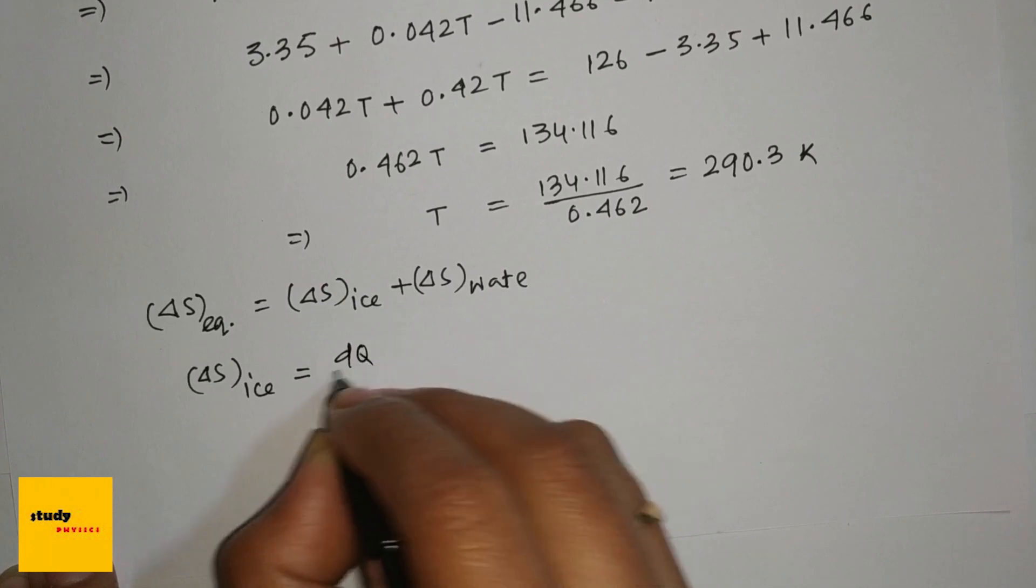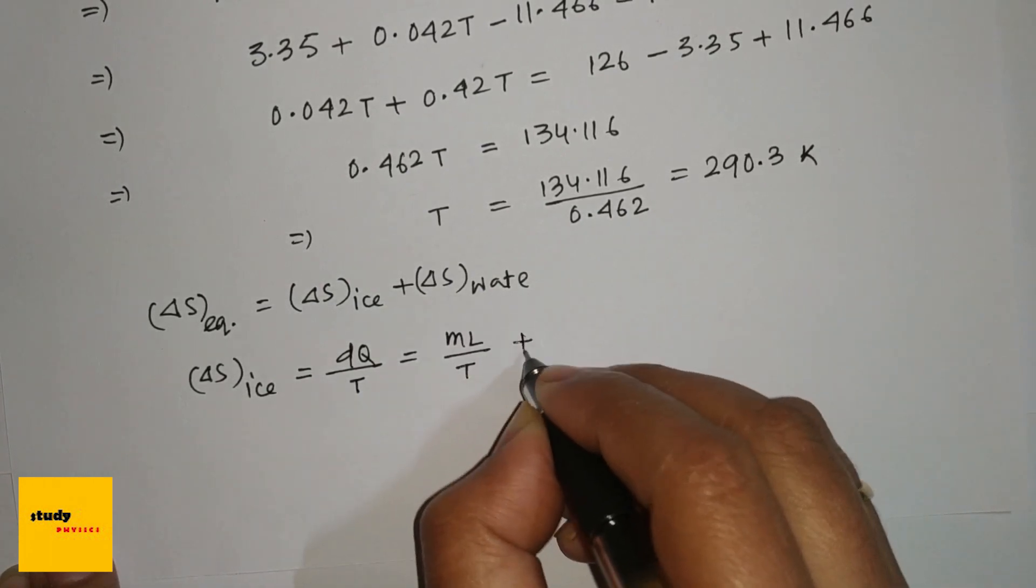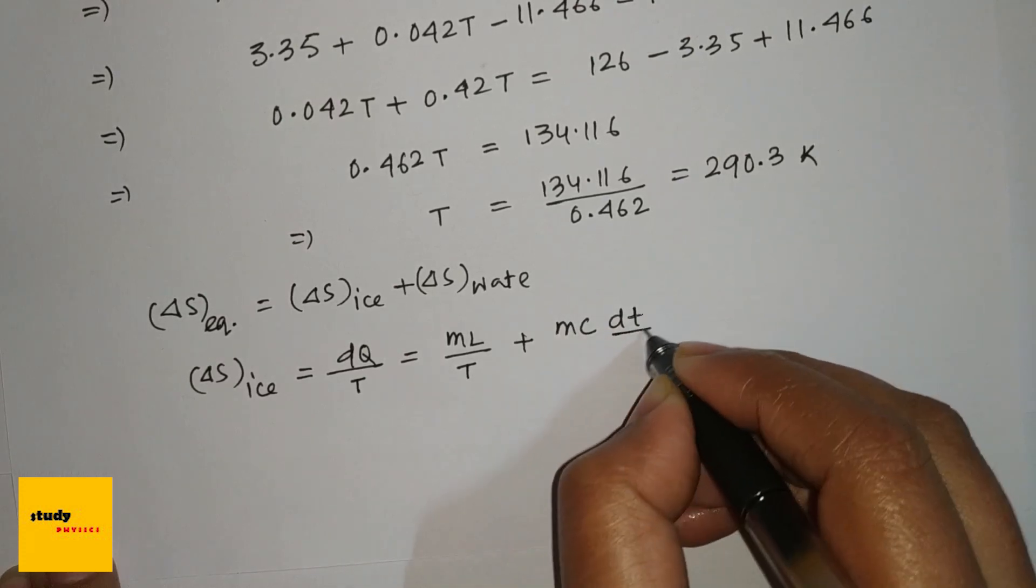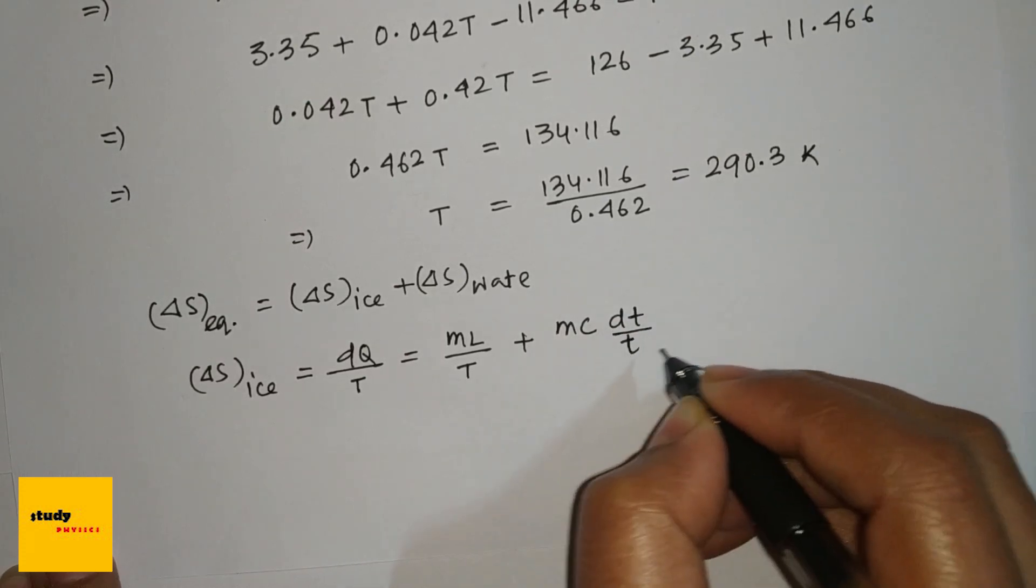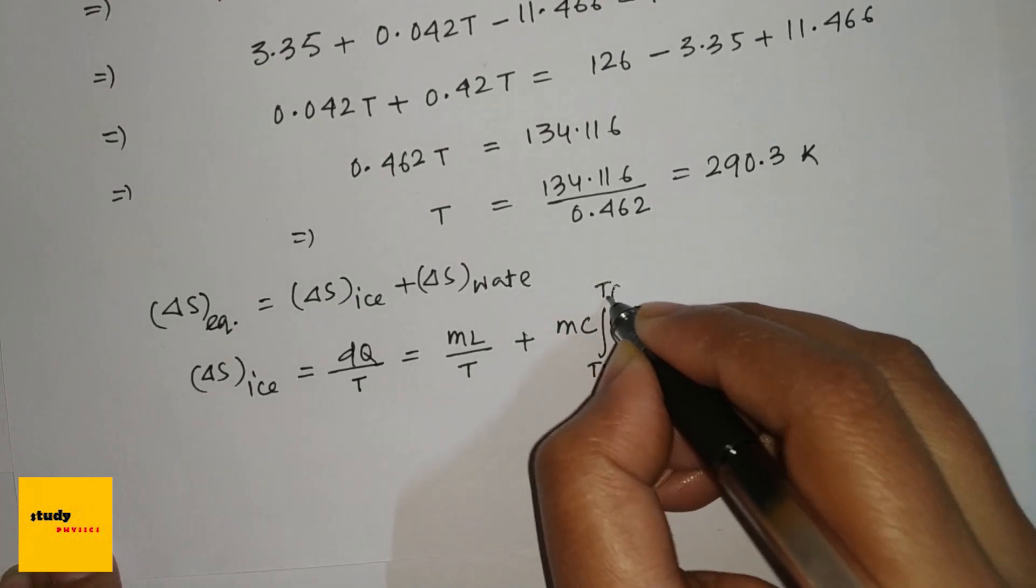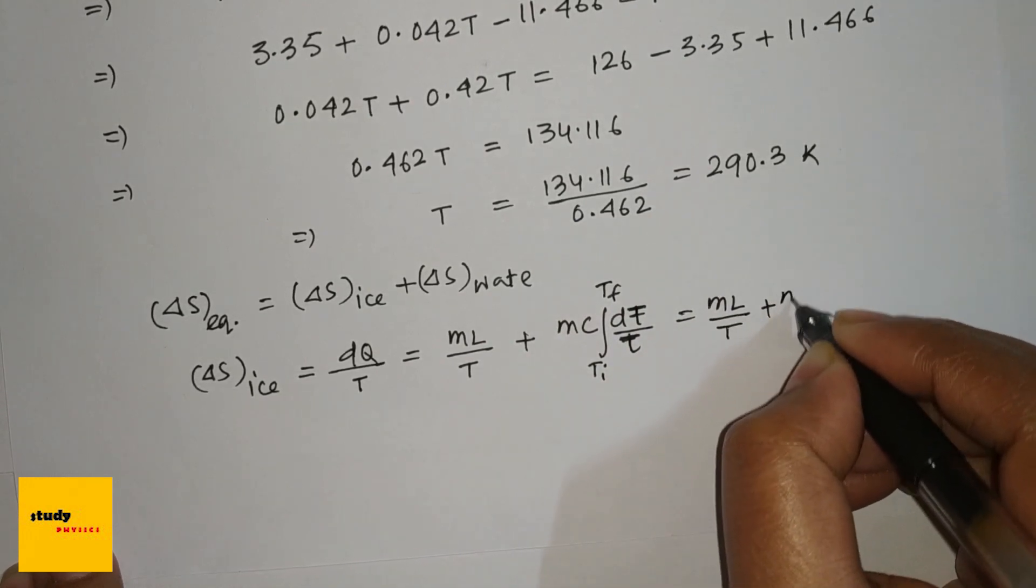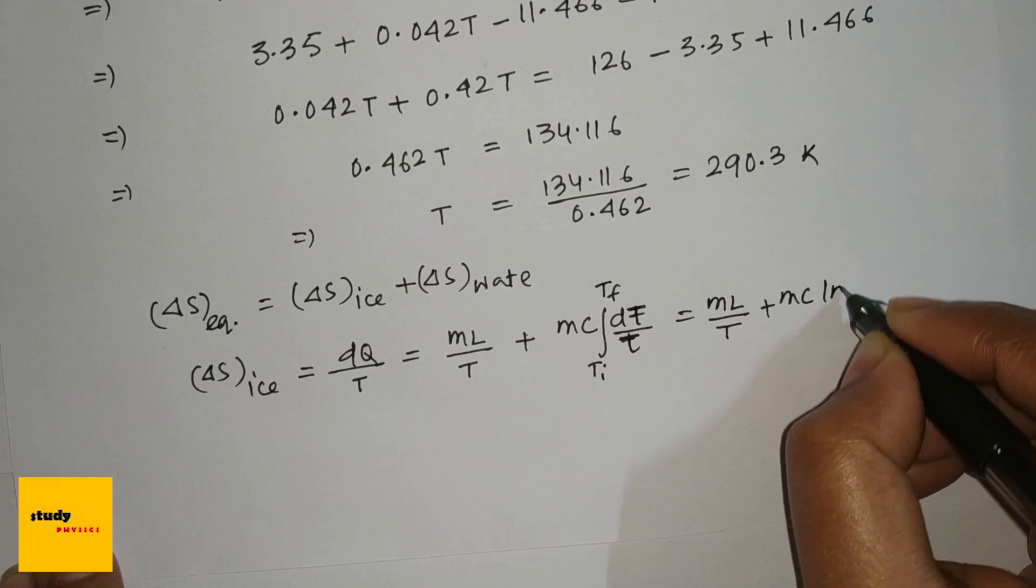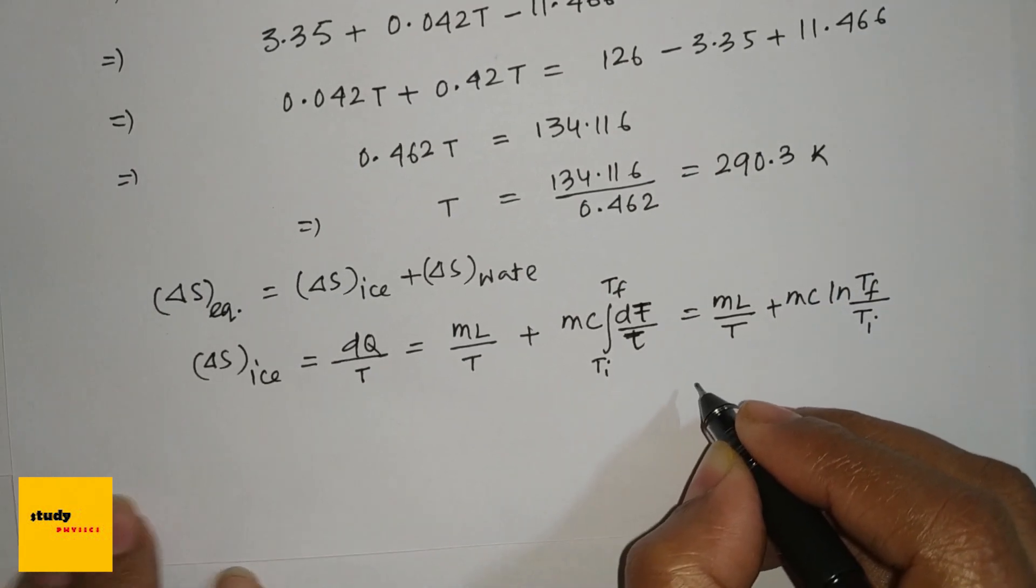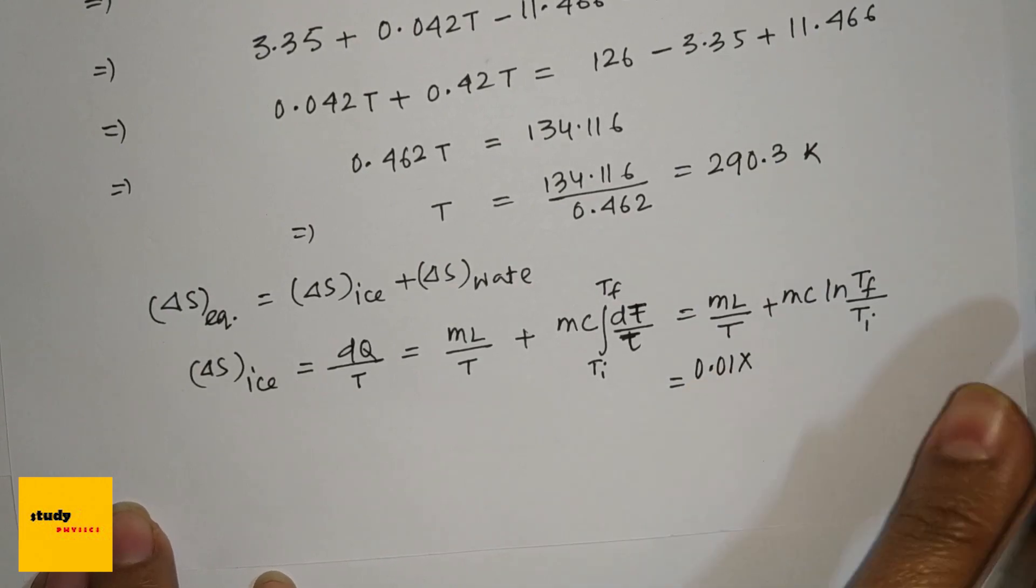And delta S of ice is, we know this is delta Q over delta T, and heat is here ML divided by T plus mc delta T divided by T. So this is initial temperature, this is final. It means ML divided by T plus mc ln of T_f divided by T_i, which is ML: 0.01 kg and L is 335 kilojoules per kg.